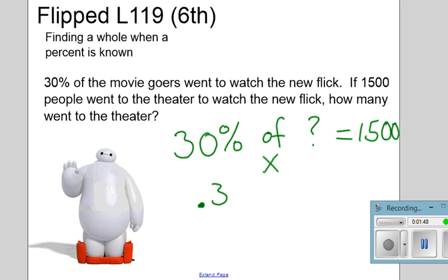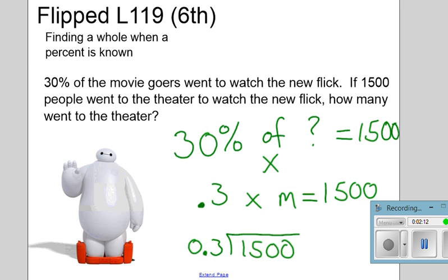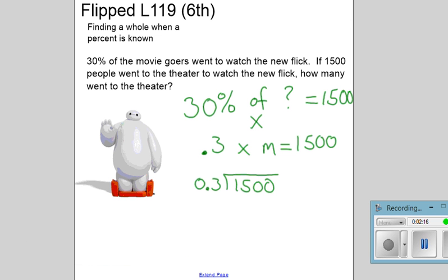Our equation after we convert the percentage to a decimal is going to be 0.3 times unknown equals 1500. To solve for this equation, I'm going to take 1500 and divide by 0.3. Dividing by a decimal, I'm going to get rid of the decimal on the outside and so I must move the decimal on the inside and then place the decimal straight up.